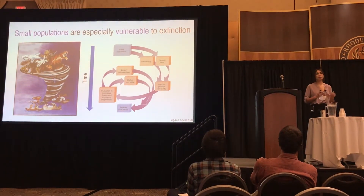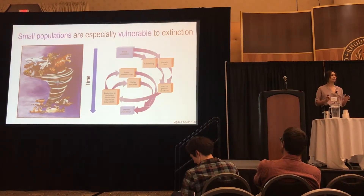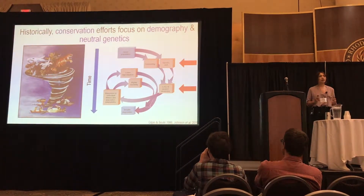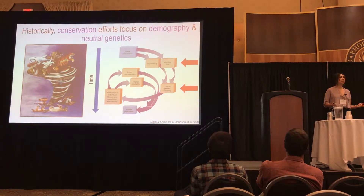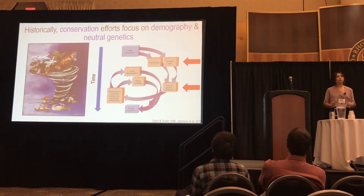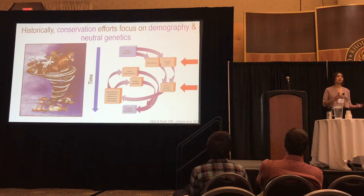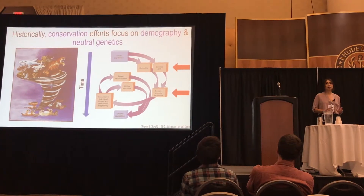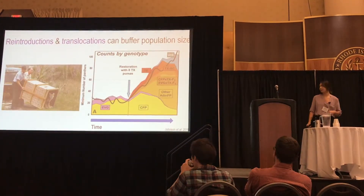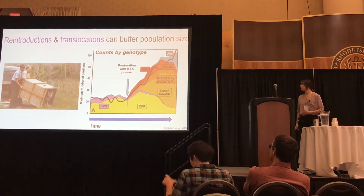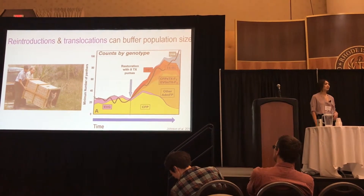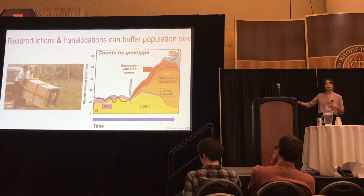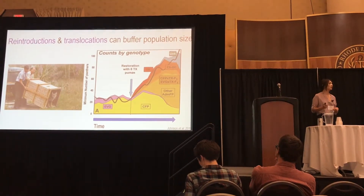And with this, we know that there are some managers and conservationists that historically tried to halt this extinction vortex by focusing primarily on demographic goals and goals associated with neutral genetic variation. For example, in really dire situations, managers may choose to reintroduce and translocate individuals to increase the effective population size and to introduce genetic variability. And sometimes this works, as is the case when managers introduced Texas pumas to the Florida panther population. Of course, the Florida panthers are no longer Florida panthers uniquely, but we are still able to maintain that genetic variation that really distinguishes that population.